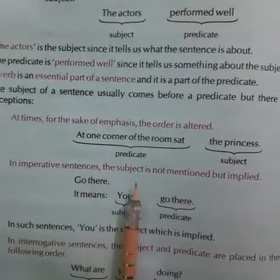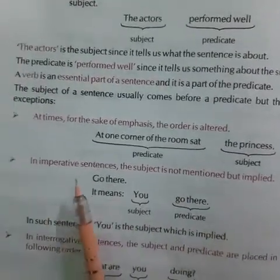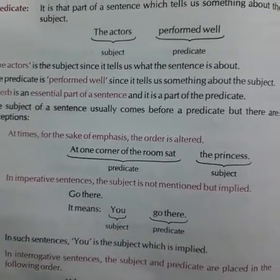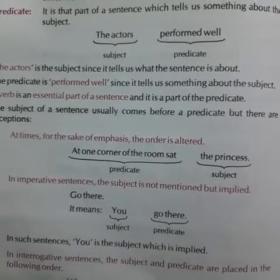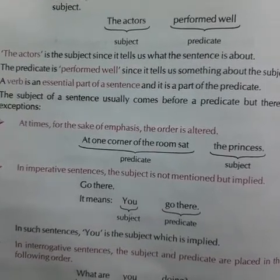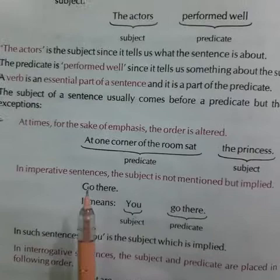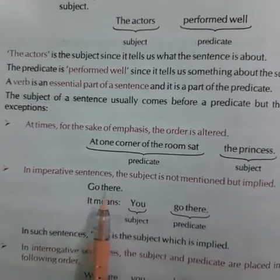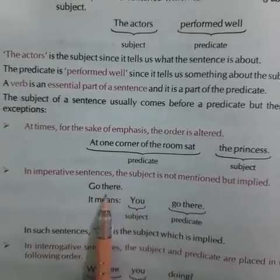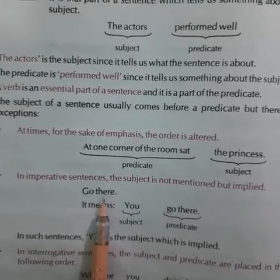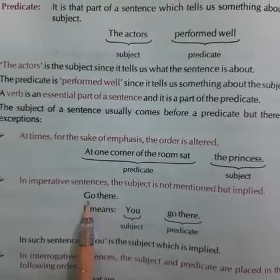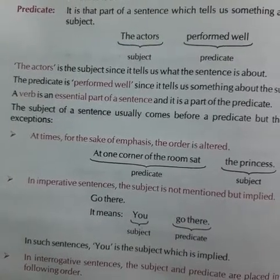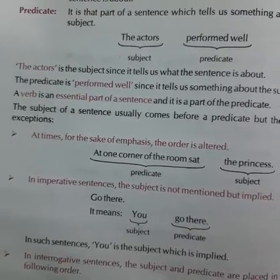In imperative sentences, the subject is not mentioned but implied. In imperative sentences, you can see there are commands, orders, and requests. All these things are under imperative sentences. For example, 'Go there.' No subject is given. To whom are we giving this command? We don't have any explicit subject; we have only the predicate here. Usually, 'you' is the subject in all imperative sentences.